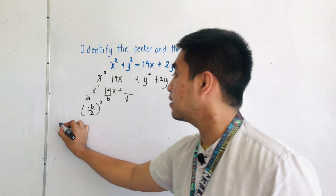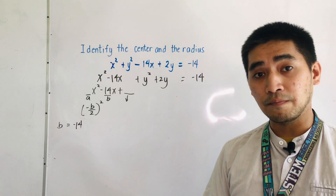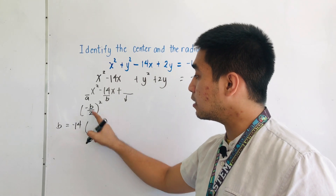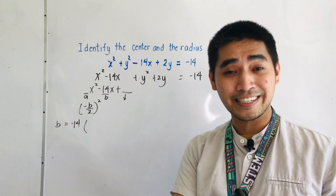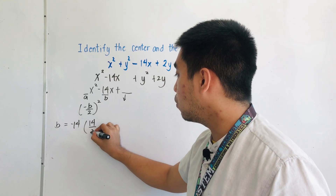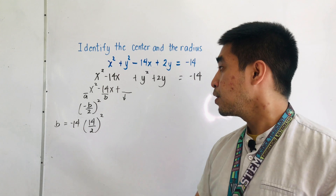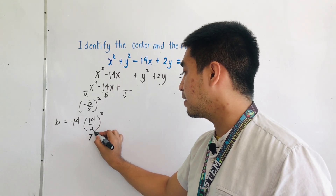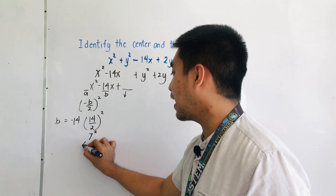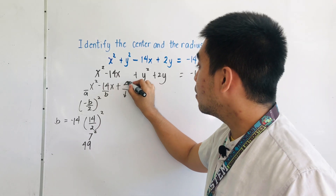Our b is negative 14. Substituting this in our formula, we have negative of negative 14, which is positive 14, over 2, squared. 14 over 2 gives us 7, and 7 squared is 49. Therefore, this completing term is equal to 49.